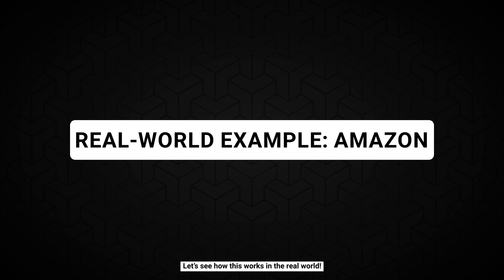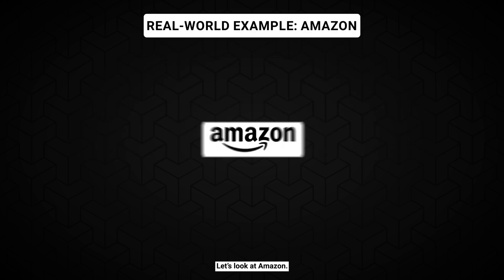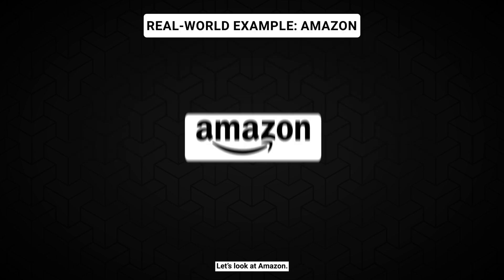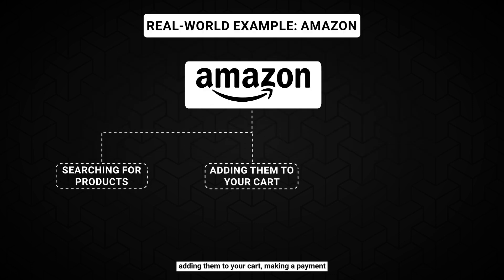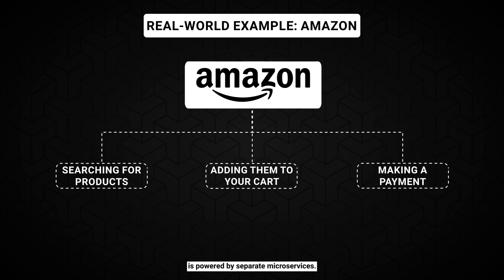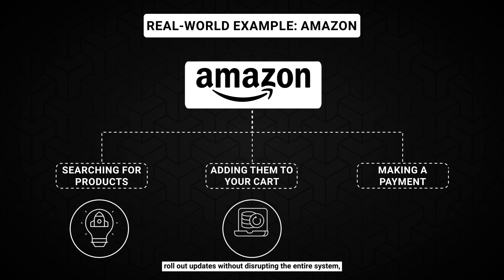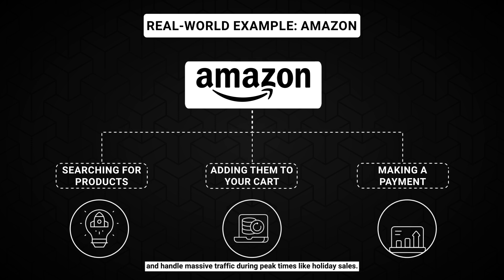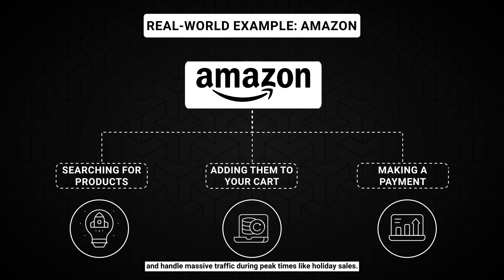Let's see how this works in the real world — let's look at Amazon. Every feature: searching for products, adding them to your cart, making a payment — is powered by separate microservices. This approach allows Amazon to innovate quickly, roll out updates without disrupting the entire system, and handle massive traffic during peak times like holiday sales.